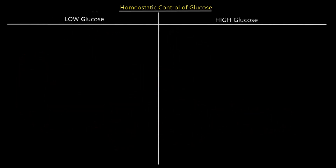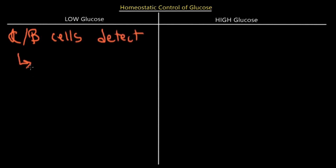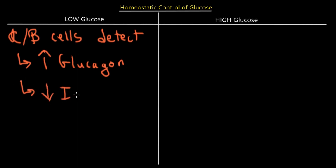First, let's talk about what happens at low glucose levels. The alpha and beta cells on the pancreas will detect this and respond by producing more glucagon — glucagon will be released from the alpha cells at a higher rate — and there will be less insulin released.